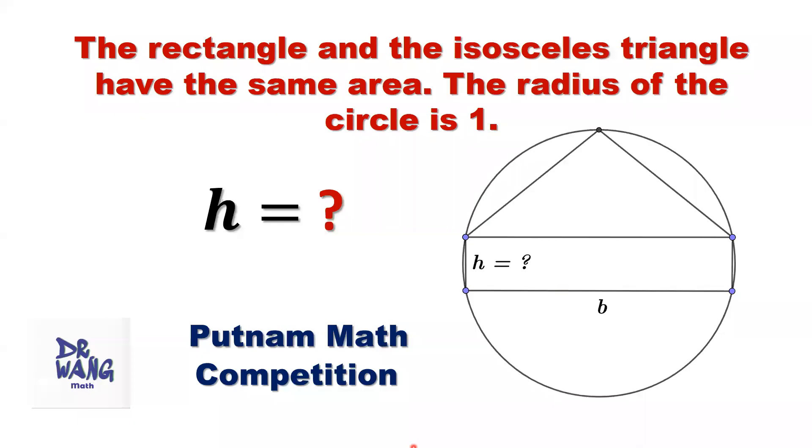Hello everyone, I'm Dr. Wen. Here is the question. The rectangle and the isosceles triangle have the same area. The radius of the circle is one.